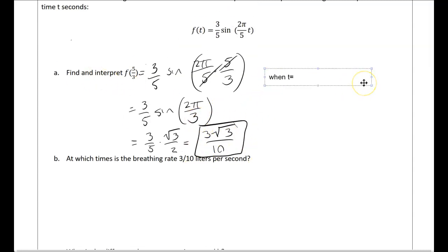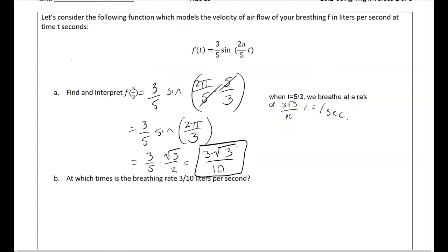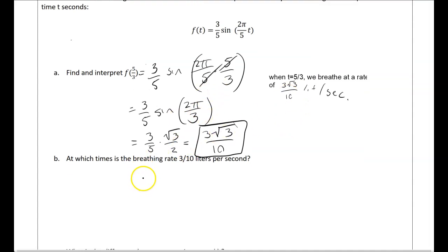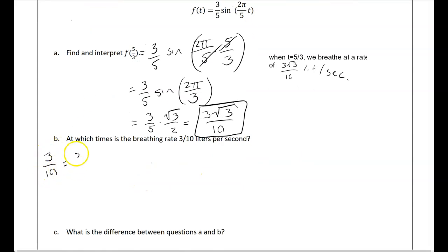So there's my solution. And we're asked to interpret that value. So the interpretation is that that's the breathing rate when t equals 5 thirds. So that would be 3 over 10 liters per second. So that's the interpretation. The reason that's important is because here we're asked to kind of do the exact opposite. So the way that this would look would be like this. And then I'm trying to isolate t. So here's where idea of inverses come in.